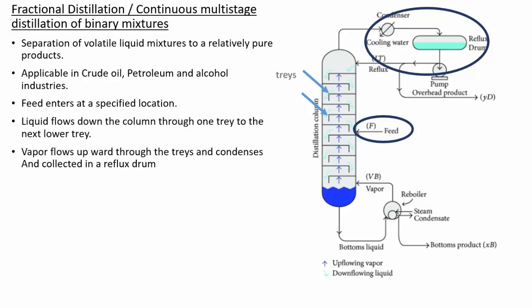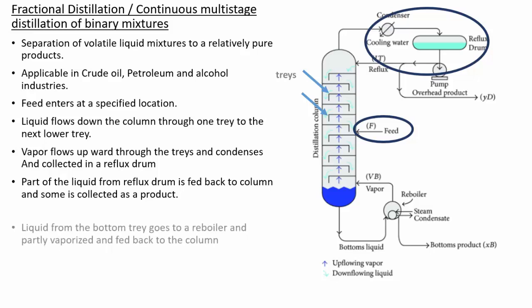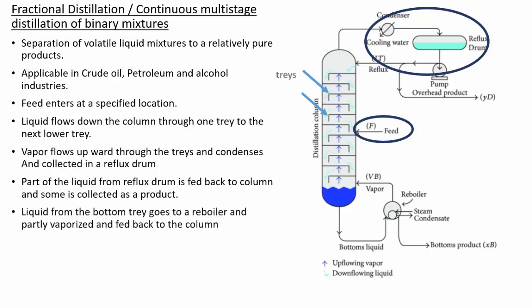The liquid at the bottom is sent to a reboiler, partially vaporized, and fed back to the tower. Some liquid is collected as a bottom product, which has a large composition of B — the less volatile component. At the top product, you have a larger amount of A. In fractional distillation, the two components A and B are separated to high purity. There is counter-diffusion of components on each tray — component A in the liquid passes to the vapor and component B in the vapor passes to the liquid.